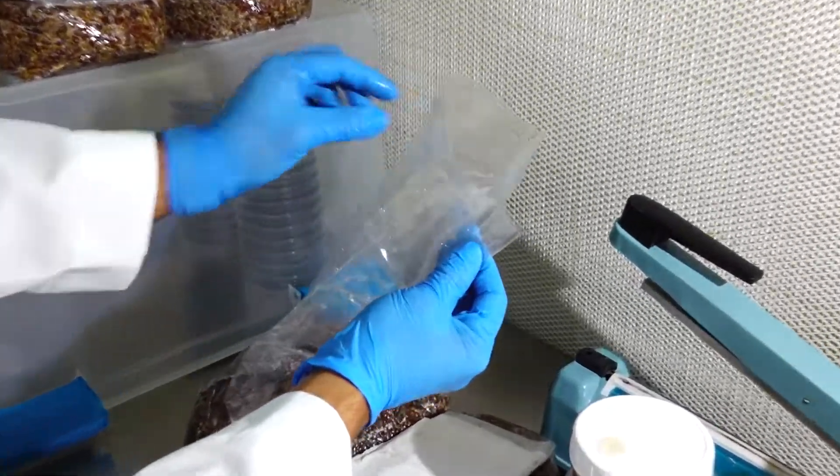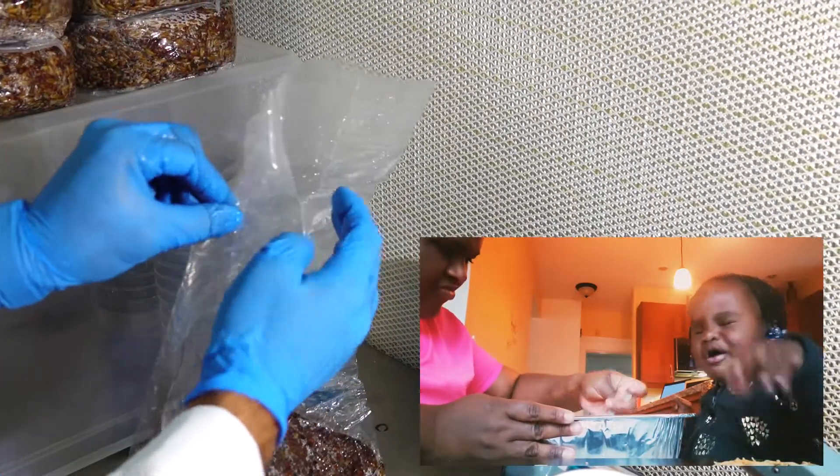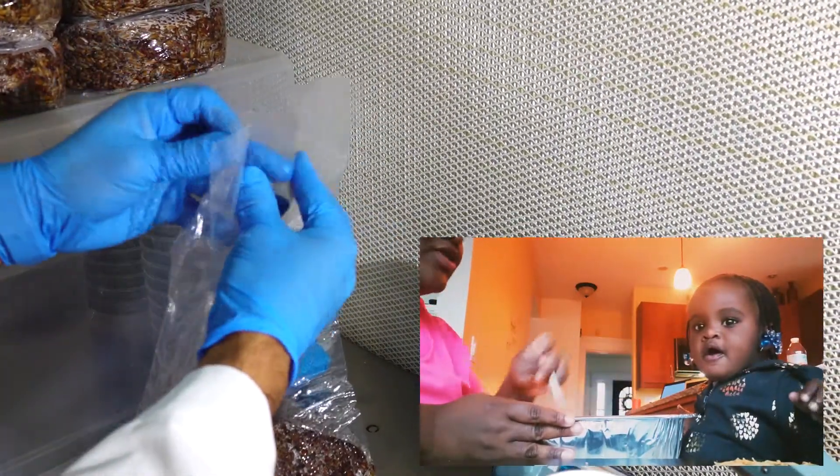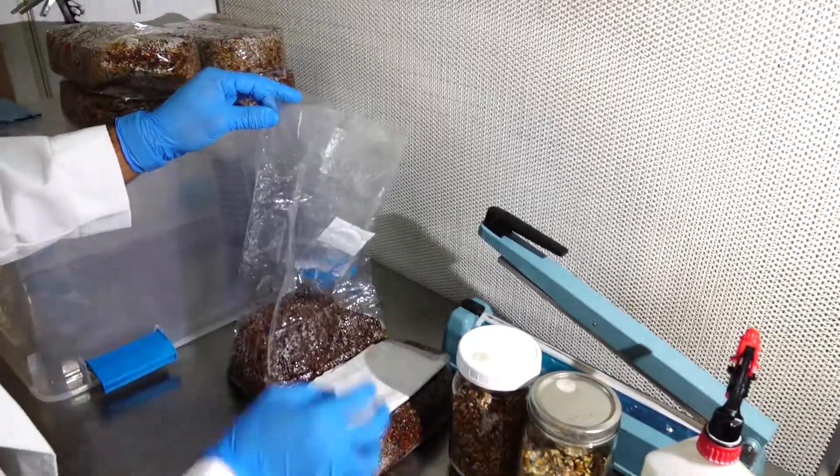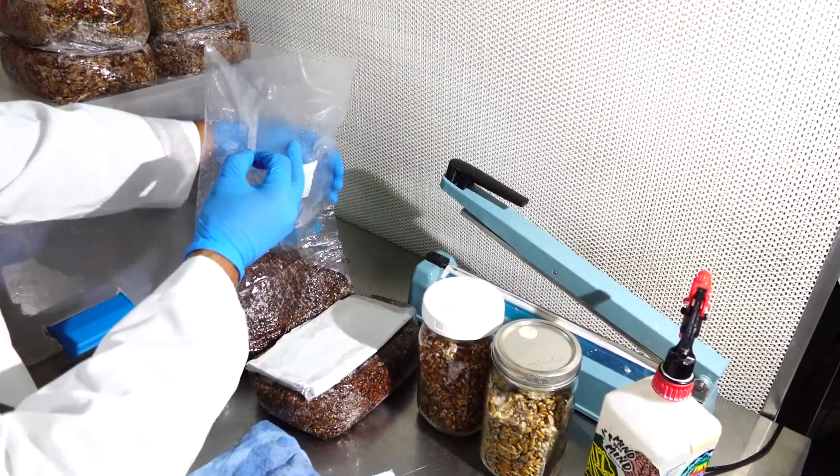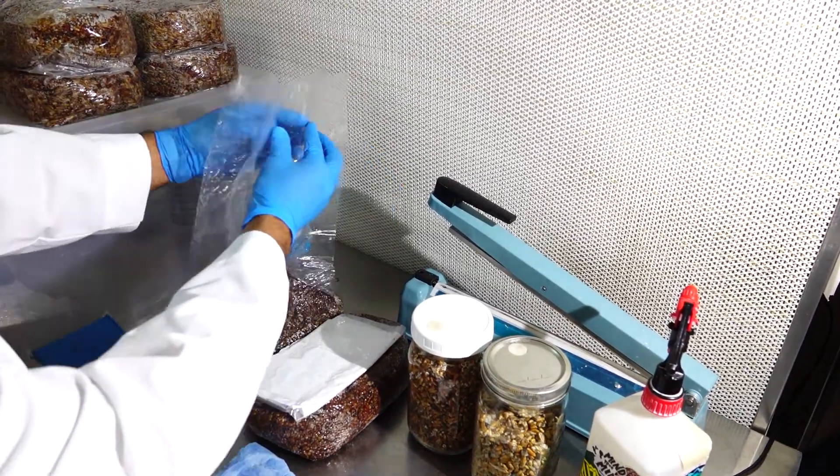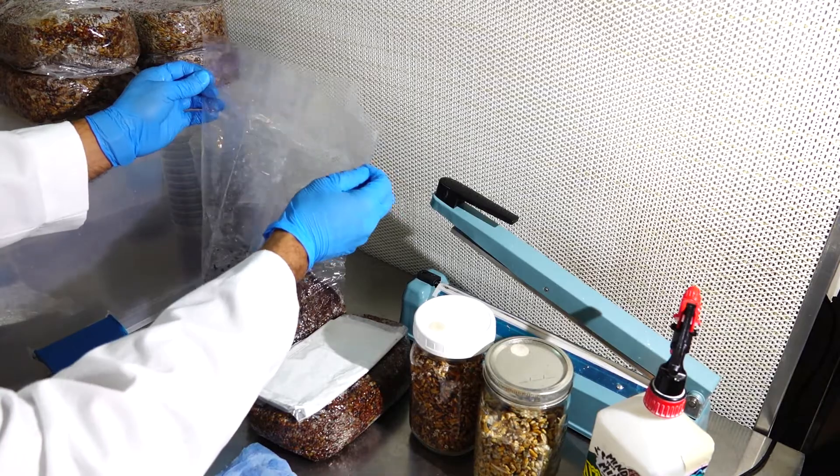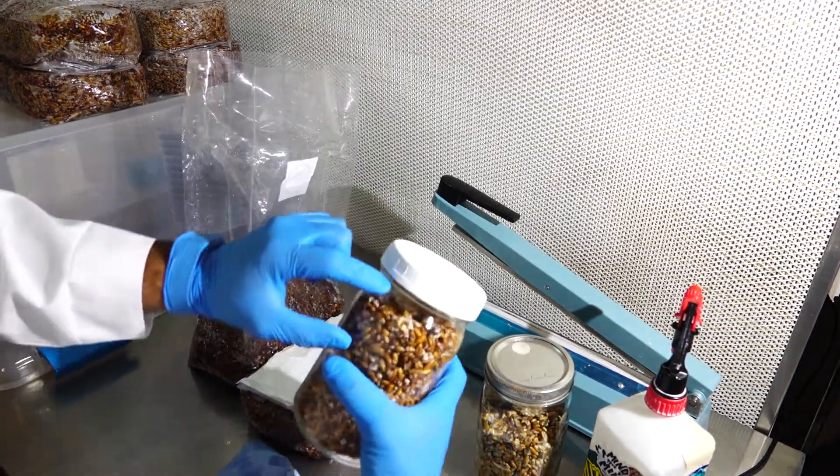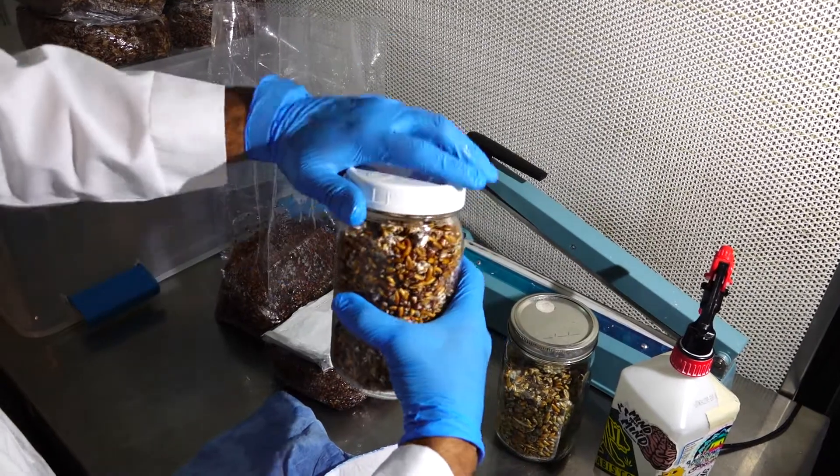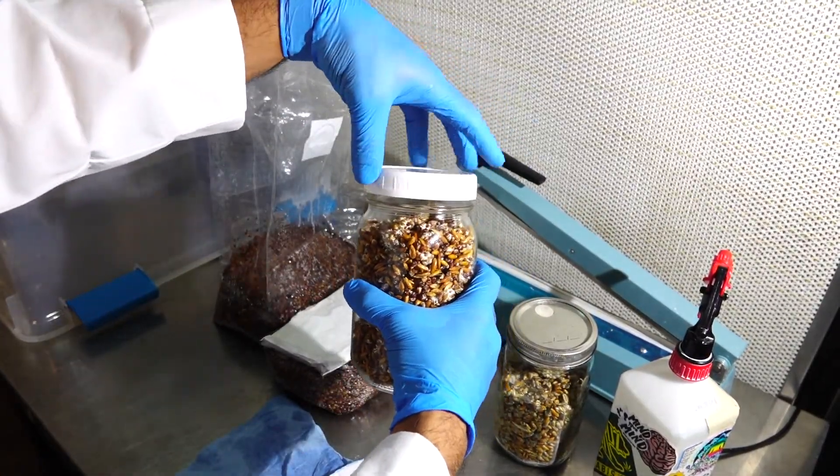You never want to put your hands above the top of the bag so that you don't introduce anything into the bag that's unwanted. As you can see here, the tyvek method worked really well from our previous video and that allows the bag to be almost sealed on its own without the need of an impulse sealer prior to inoculation.